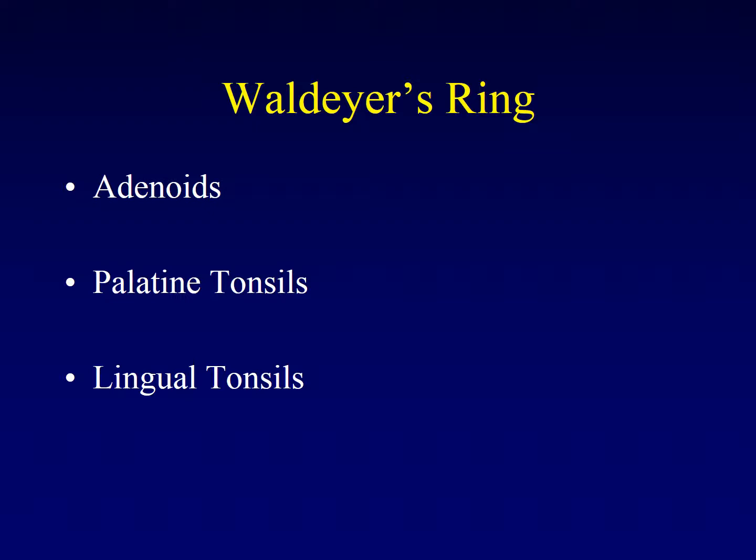Together, these areas form a circle or ring that surrounds the nasopharynx and oropharynx. The adenoids are in the midline of the nasopharynx. The palatine tonsils are on either side of the oropharynx. And the lingual tonsil completes the ring as it comes across the base of tongue, again in the oropharynx.